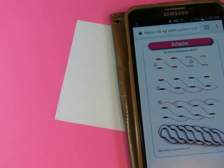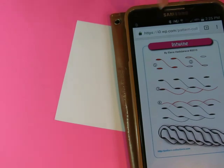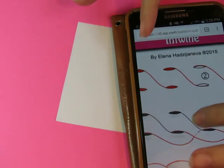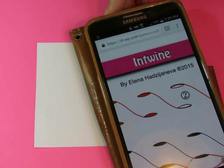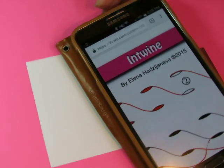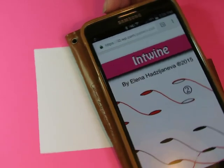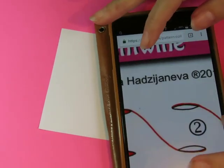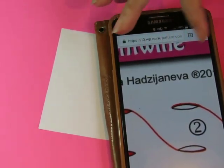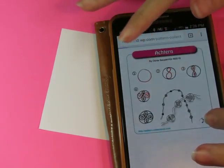All right, let's start another one. That last one was easy. So of course, this one is going to be a little bit more challenging. This one is called Entwine by Elena Hadjavina. I just butchered your name, Elena, I am so sorry. I don't know how to say that. I feel bad.